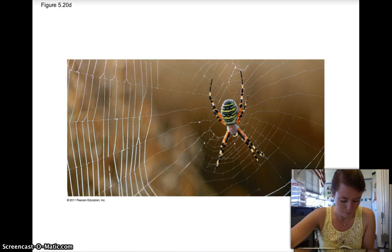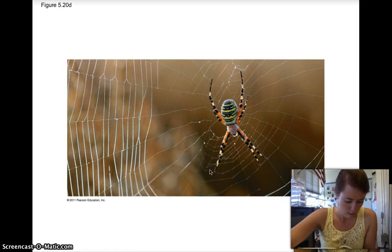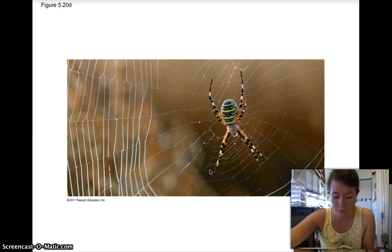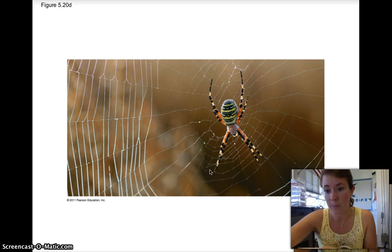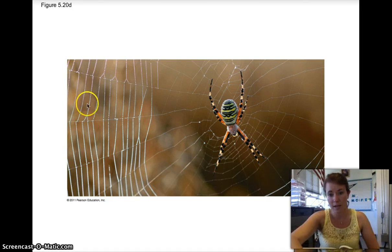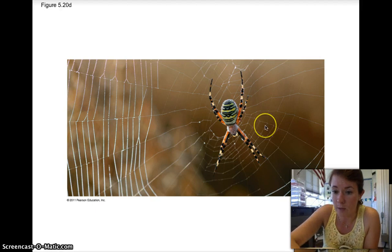For example, the strands of a spider's web contain a protein called transthyretin, and this transthyretin is made up of many beta-pleated sheets repeated over and over. This gives it so much strength that a strand of spider's silk is actually stronger than a piece of steel at the same diameter — though most steel has a much larger diameter than a spider's web.